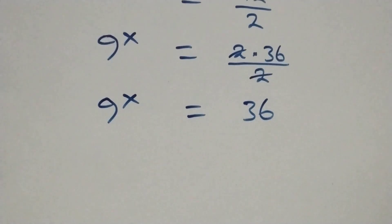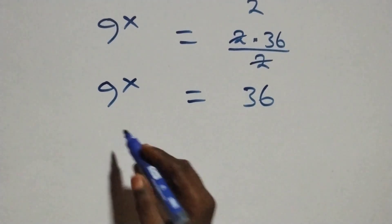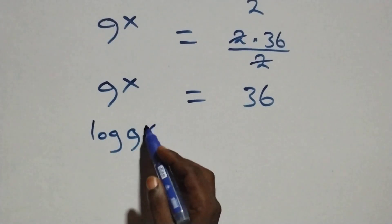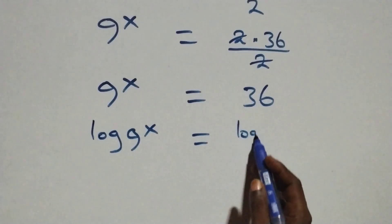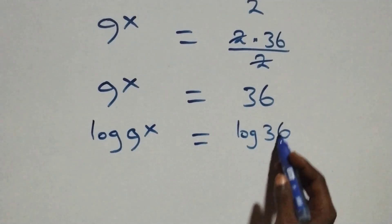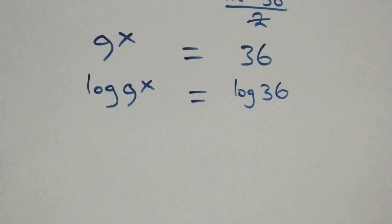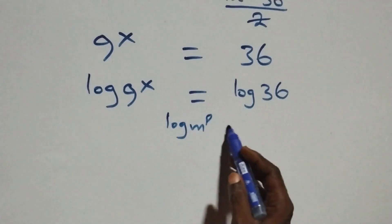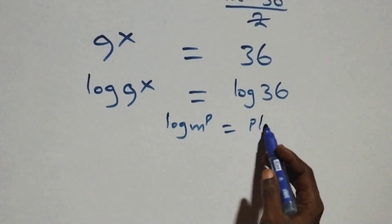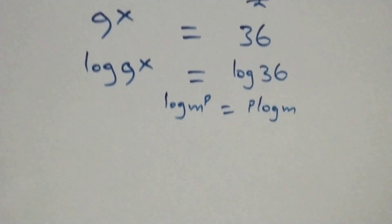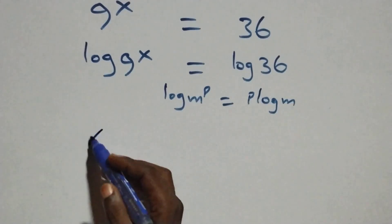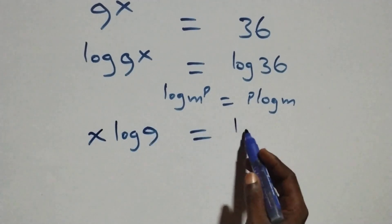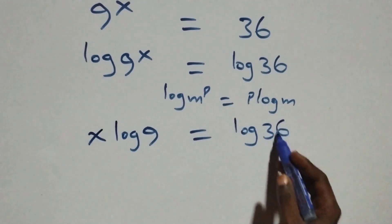The next step is to take the log on both sides. We have log of 9 raised to power x equals log 36 on this side. Then we apply the power law of logarithms: when we have log m raised to power p, it is the same as p times log m. So what we have becomes x log 9 equals log 36.